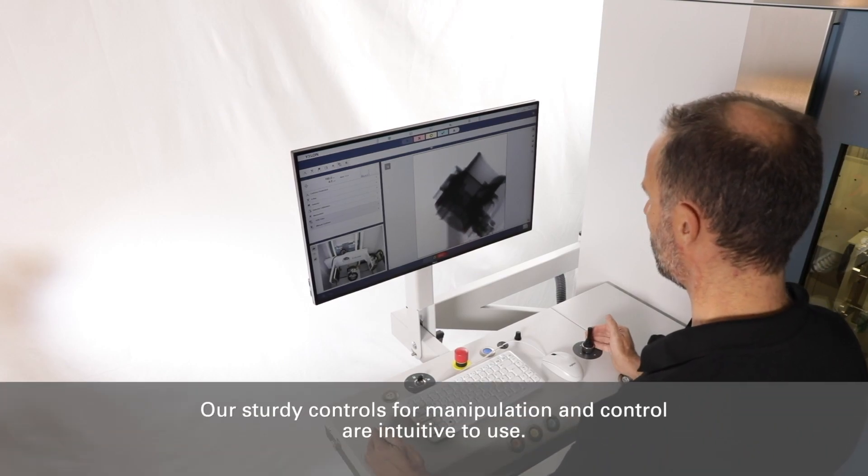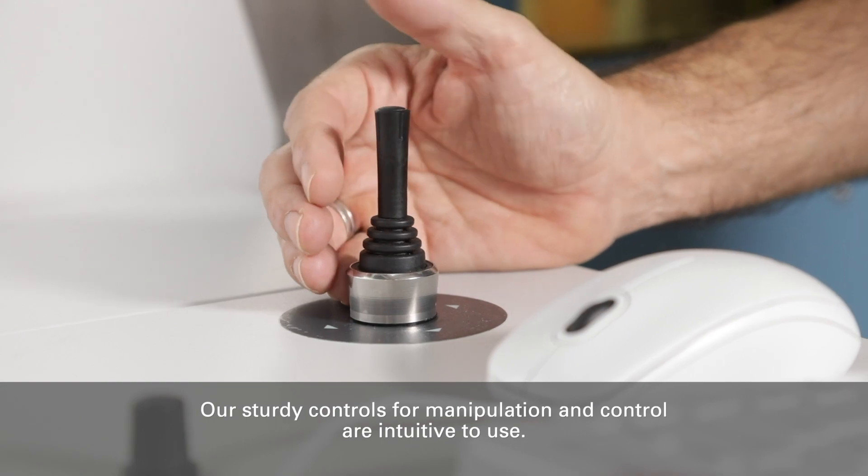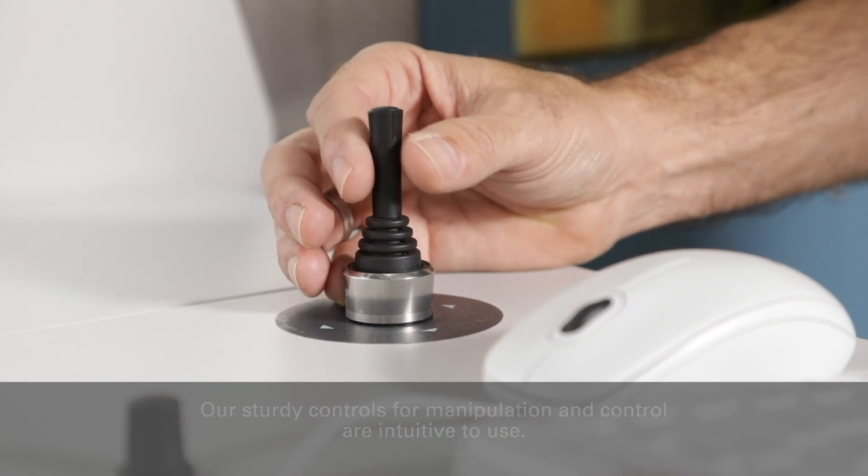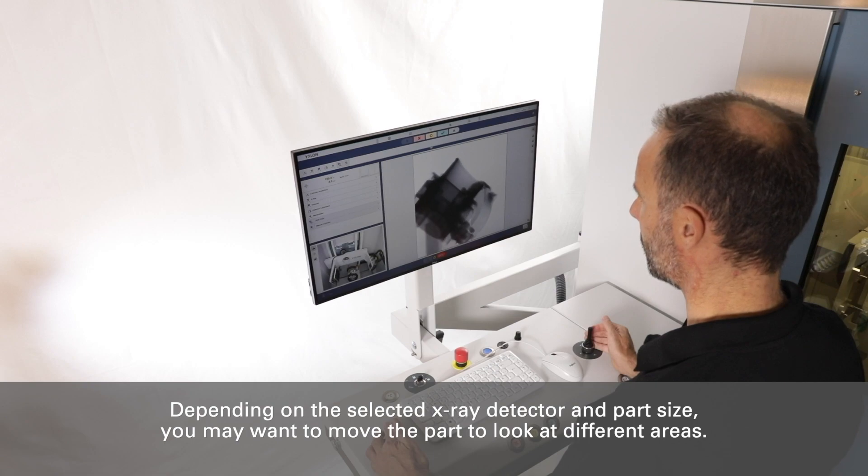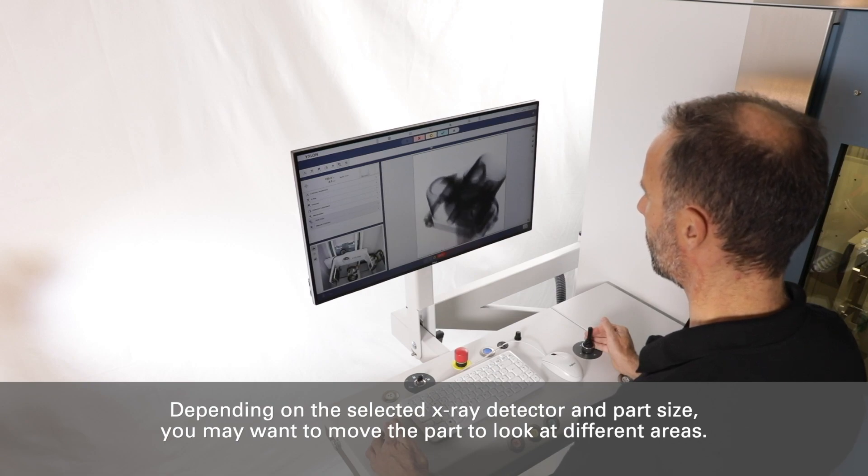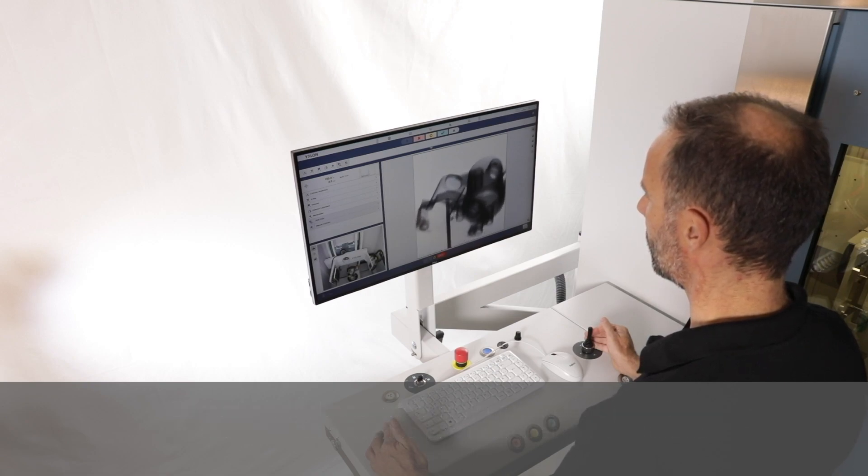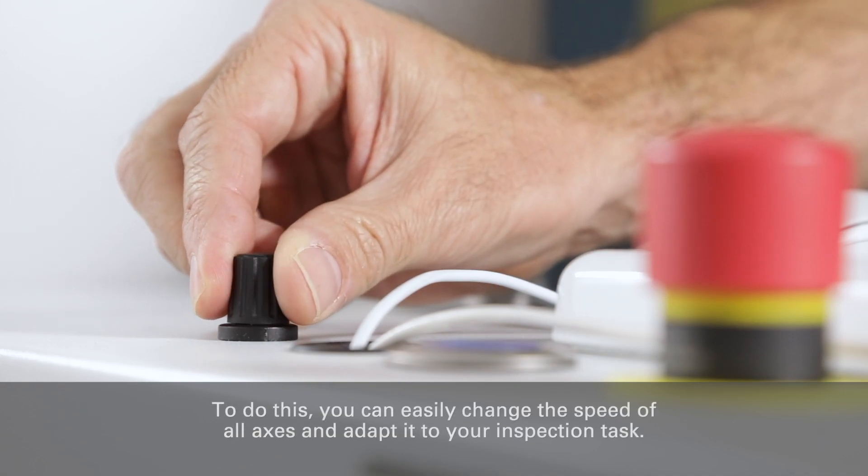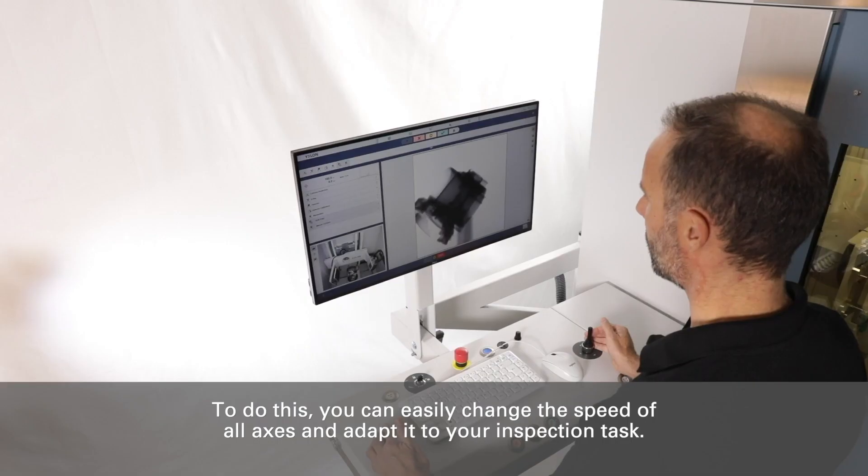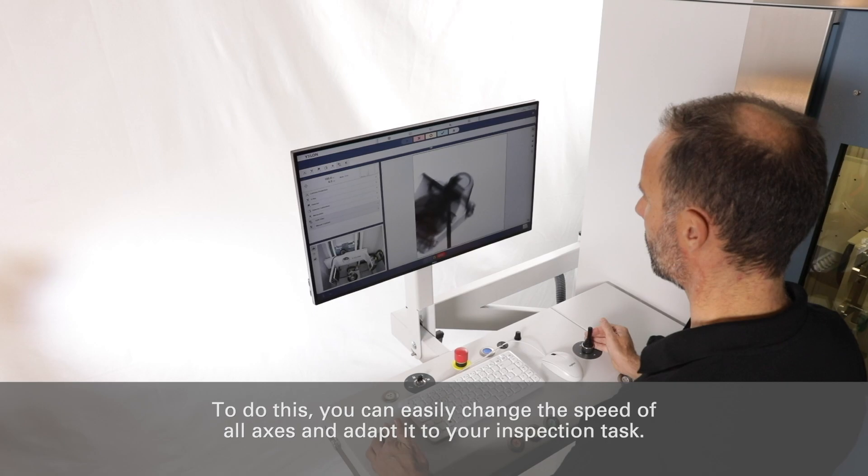Our sturdy controls for manipulation and control are intuitive to use. Depending on the selected x-ray detector and part size, you may want to move the part to look at different areas. To do this you can easily change the speed of all axes and adapt it to your inspection task.